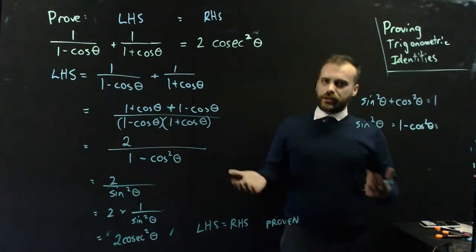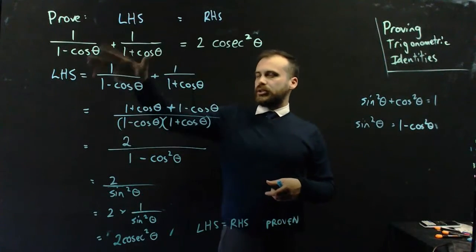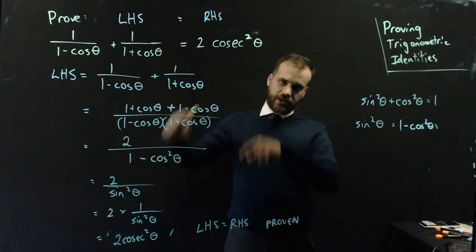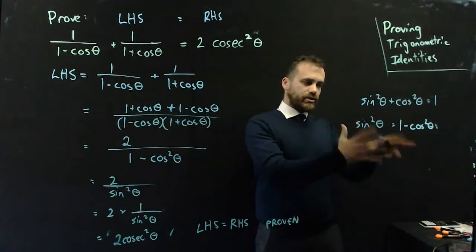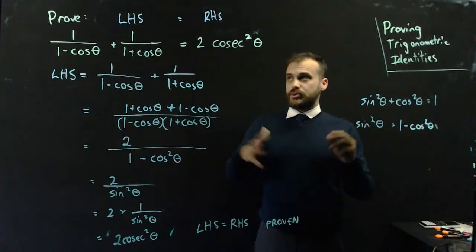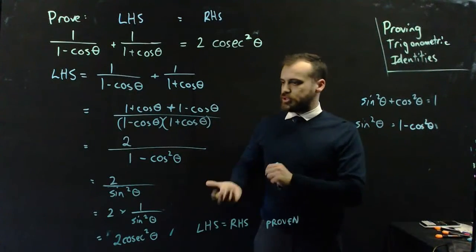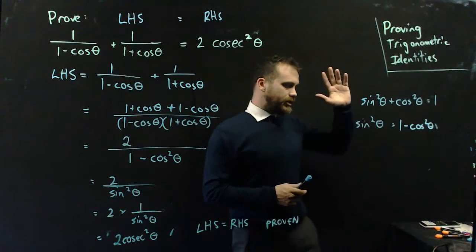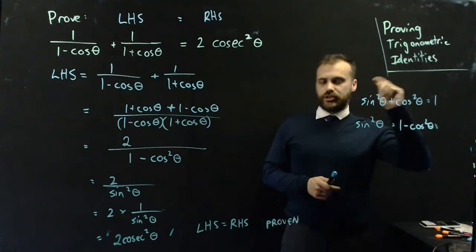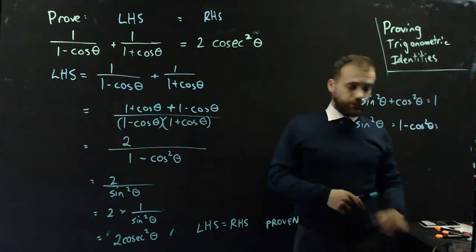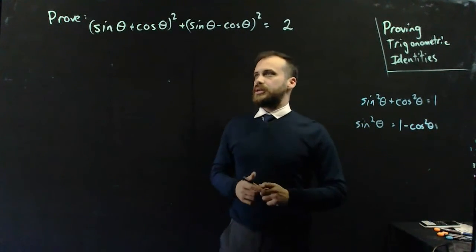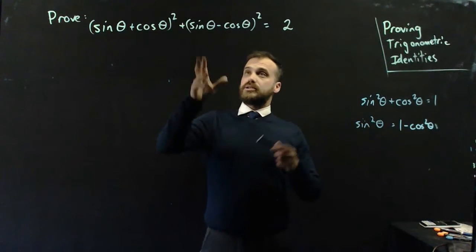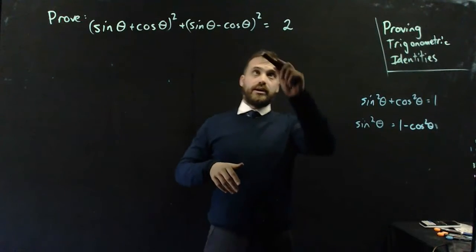So a couple of little tricks here: we look at the more complicated side and we try to simplify it until it looks like the simpler side. We keep in the back of our mind the Pythagorean identity, because with trig stuff it happens all of the time. And then we keep in mind those reciprocal functions. That is one trig identity of hundreds that you could prove. Why don't we do another one while we're here? Let's prove that sine theta plus cos theta, all squared, plus sine theta minus cos theta, all squared, is equal to two.